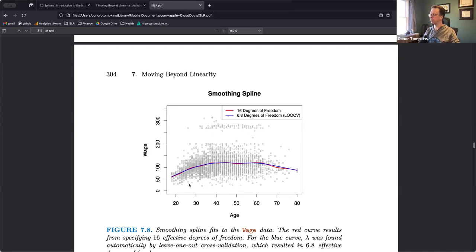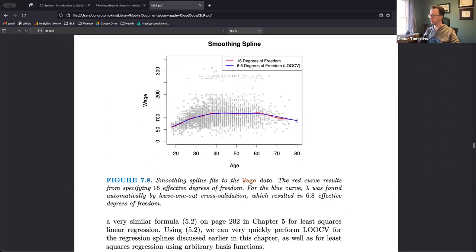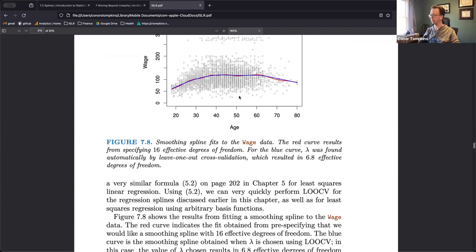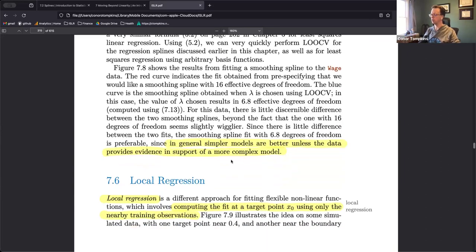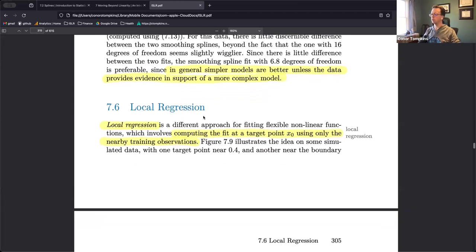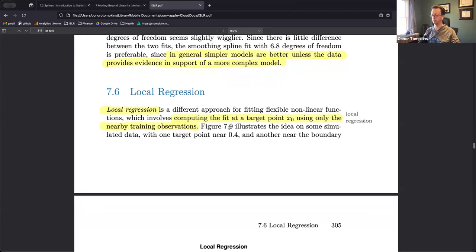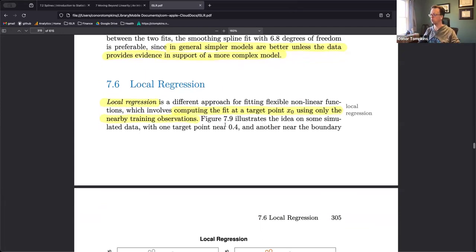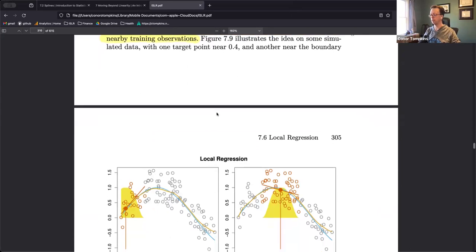So you can do this via cross-validation. Again, just comparing splines with varying degrees of freedom. They say later on, in general the simpler model is preferred unless the data justifies a more complex model. So again, if there's diminishing returns in the degrees of freedom that you have, then choose the simplest one that still gives enough accuracy.